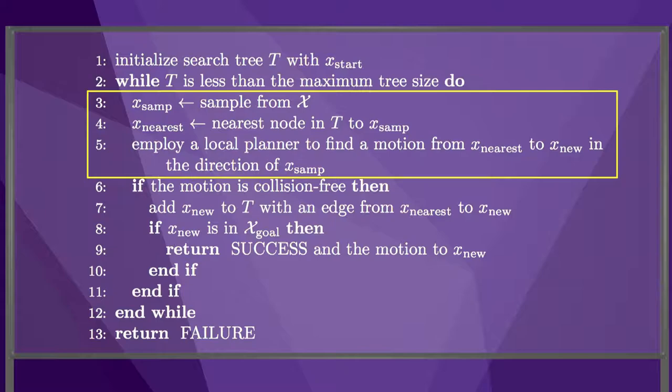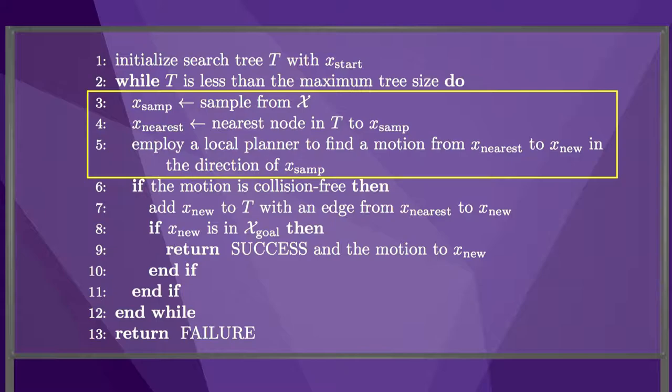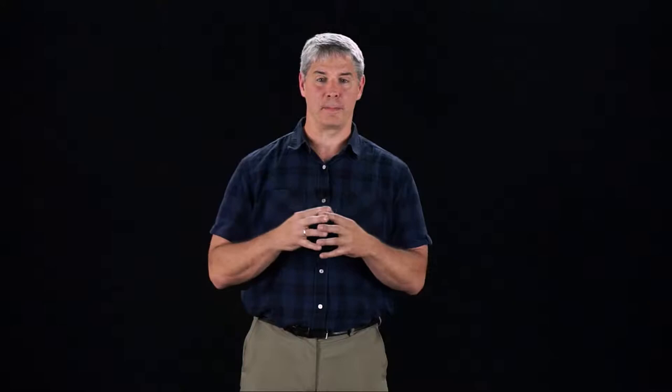Let's focus on lines 3, 4, and 5, as they offer a lot of flexibility to customize the algorithm, and they are critical to the efficiency of the algorithm. The sampler in line 3 could choose states uniformly randomly from the state space X, but other options are possible, including deterministic sampling schemes.